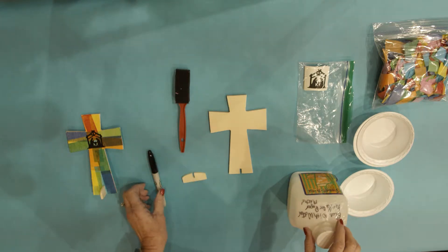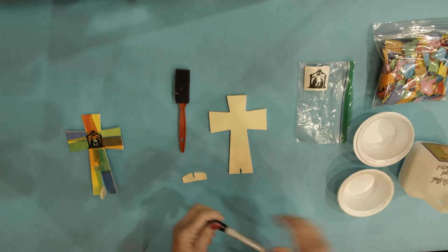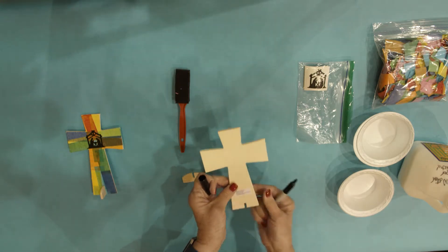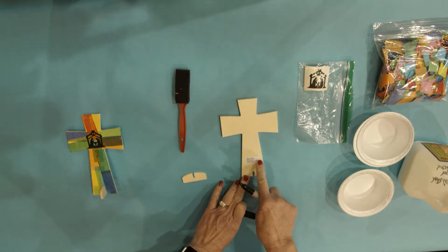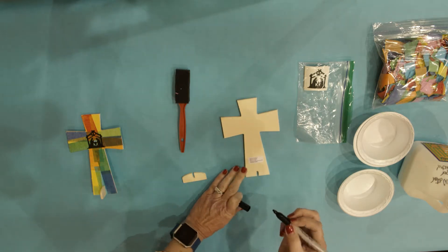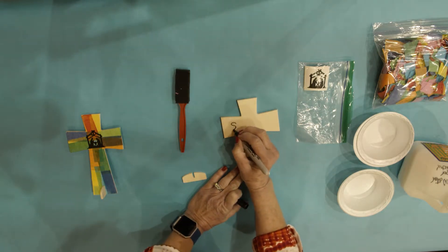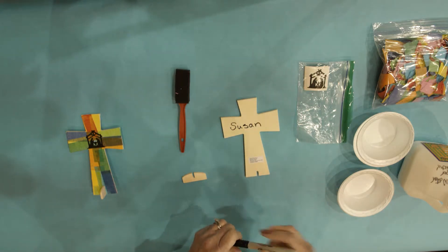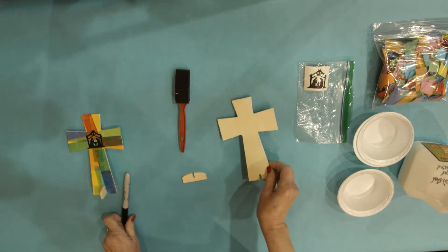Each child will have a brush. The first thing that you'll want to do is, on one side of the cross, you'll flip it over, you'll see that it has the sticker on the back. You're going to write their name with a sharpie, and then turn it over.